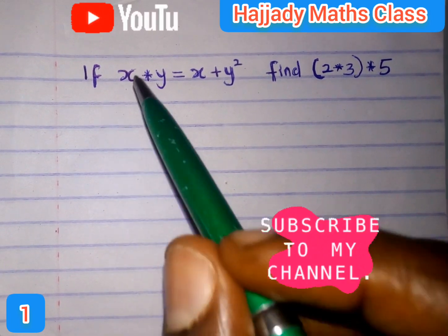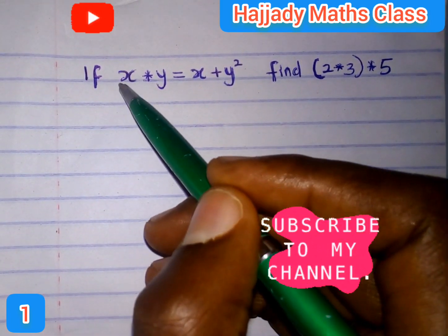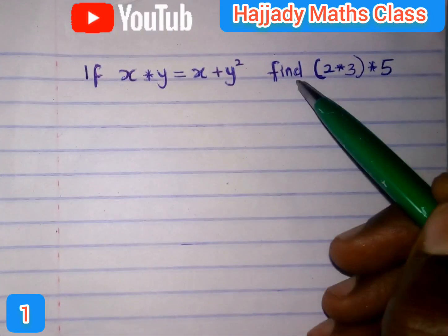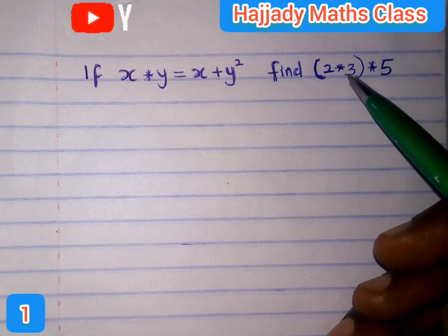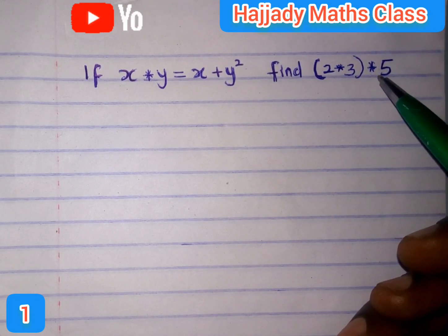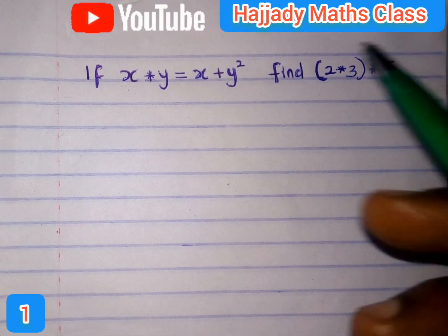Now, we have: if x★y equals x plus y squared, find (2★3)★5.